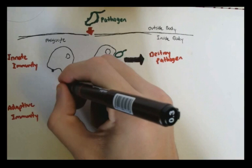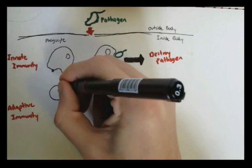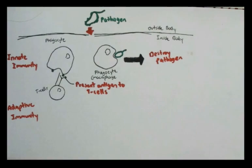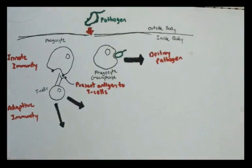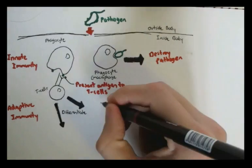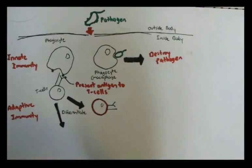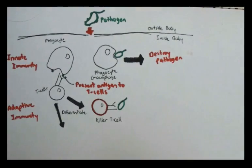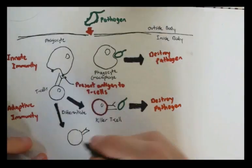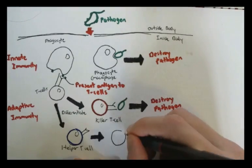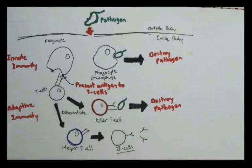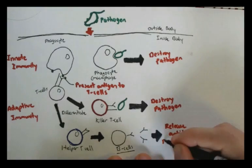This might sound all complex, but further videos will explain it in more detail. The T-cells will then be able to differentiate into T-killer cells, which will then destroy the pathogen. Or it can differentiate into the T-helper cells, which will, in turn, activate B-cells to secrete antibodies, which will also help destroy the pathogen.